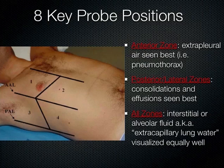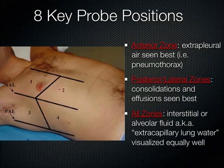Anteriorly is the best place to look for a pneumothorax. If you're supine and air has escaped from inside the lung into the pleural space, it's going to be anterior. Posterior laterally, we can best see effusions — fluid in the pleural space — and consolidations, which are pneumonias or atelectasis of the lung, because those are gravity-dependent.